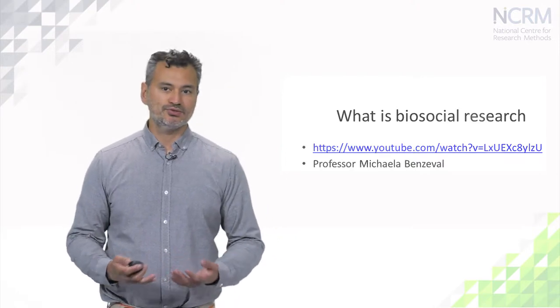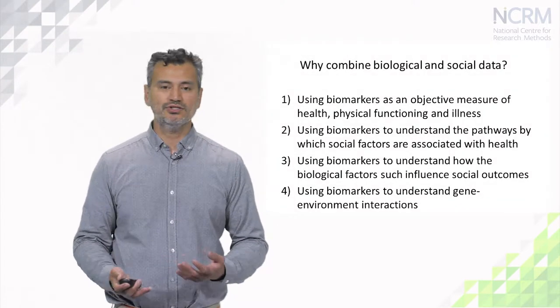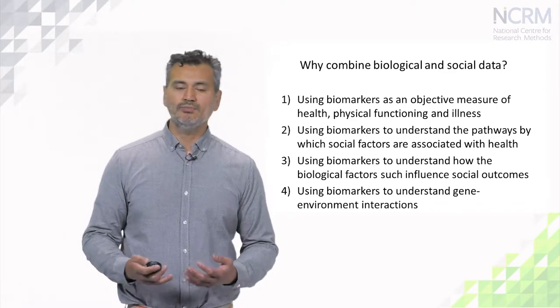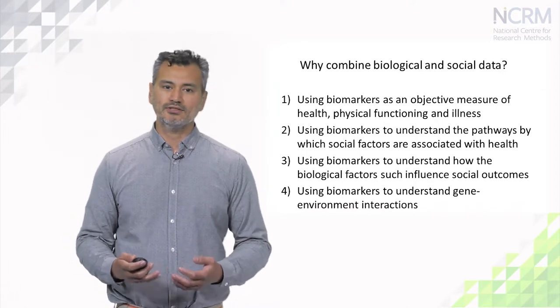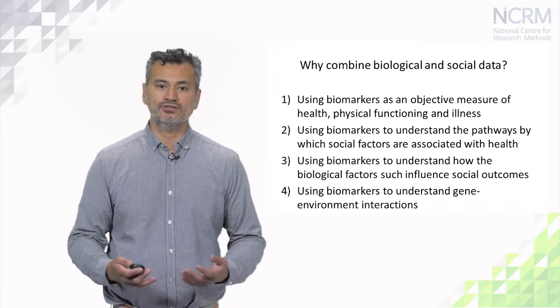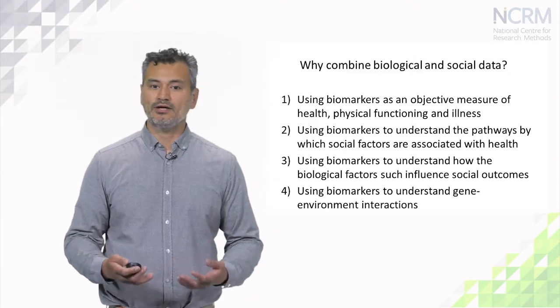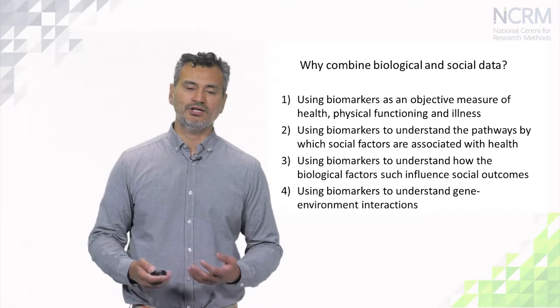Why do researchers want to combine biological and social data? That's perhaps the most important question in determining the kind of research framework we have in approaching bio-social research. There are a number of reasons: people might be interested in using biomarkers as an objective measure of physical functioning of health and illness; they might use biomarkers to look at pathways between social factors and health; or they might use biomarkers to understand how biological factors act as distal causes to influence social outcomes, including gene-environment interactions. I'll be going through example slides of how each of these bio-social frameworks can help in understanding the associations between biological and social data.